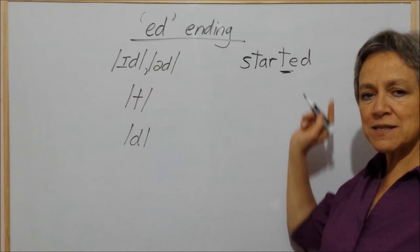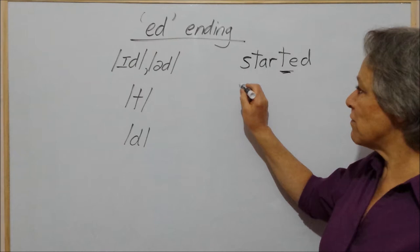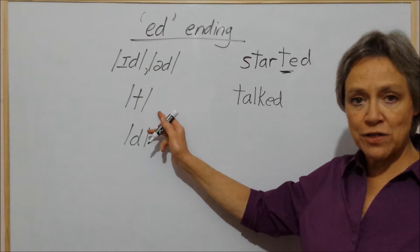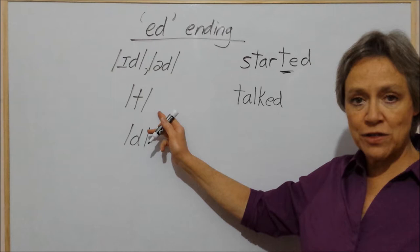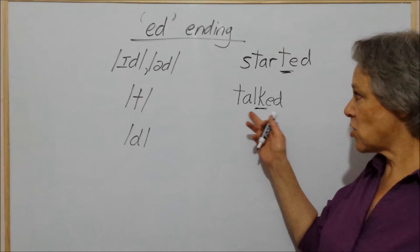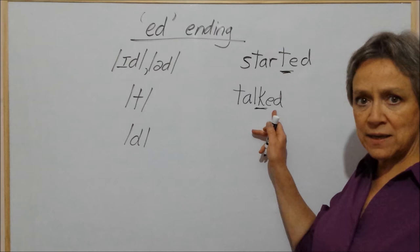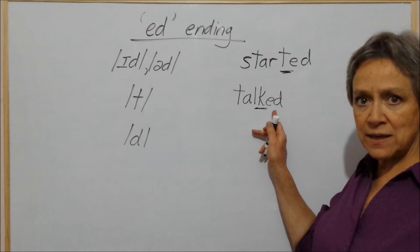With the /ɪd/ sound, I get an extra syllable. The verb 'start' ends in the sound /t/, so ed sounded like /ɪd/. If I have a different verb — 'talk' — and I add ed to it, the ed will sound like /t/. The reason for that is because the last sound in 'talk' is a /k/ sound, different from the last sound in 'start'. In 'start', the last sound was /t/; in 'talk', the last sound is /k/. So when I have a verb whose last sound is /k/ and I add ed, that ed will sound like /t/. This word is pronounced 'talked'.